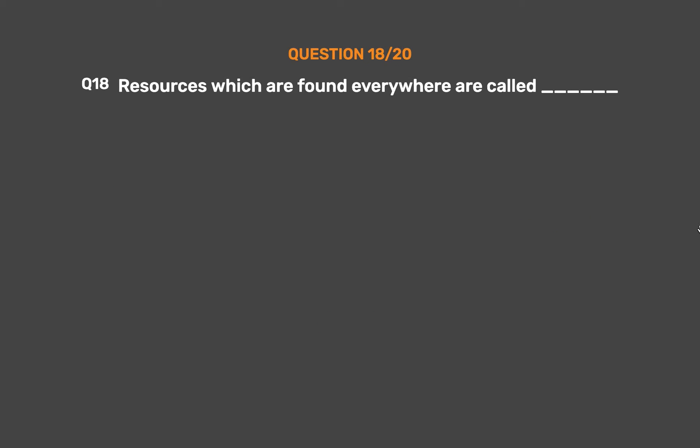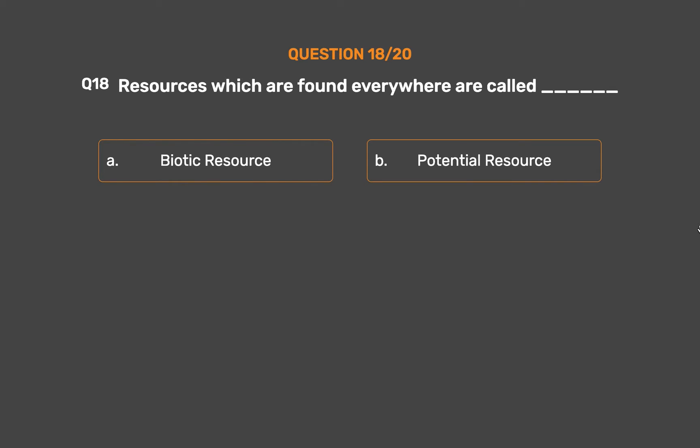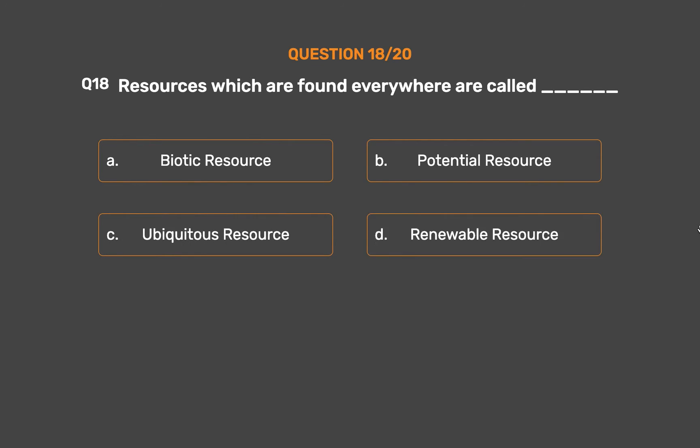Question number 18. Resources which are found everywhere are called ___. Option A: Biotic resource. Option B: Potential resource. Option C: Ubiquitous resource. Option D: Renewable resource.